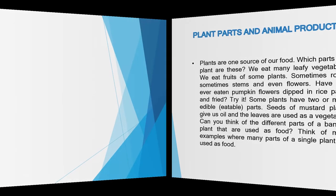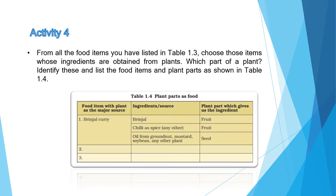Activity 4 में जो ingredients table बनाया था उसमें से plant-source ingredients लेने हैं और लिखना है कि वो ingredient उस plant का कौन सा part है। For example, brinjal curry में brinjal plant का fruit है। अगर groundnut oil use कर रहे हैं तो वो oil groundnut के seed से आया। ऐसे examples note करने हैं।